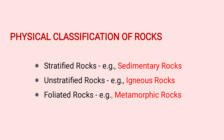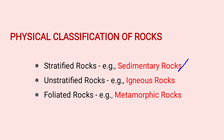Stratified rocks are formed in layers — one layer over another. They are easy to split. For example, sedimentary rocks such as slated sandstone are examples of stratified rocks.